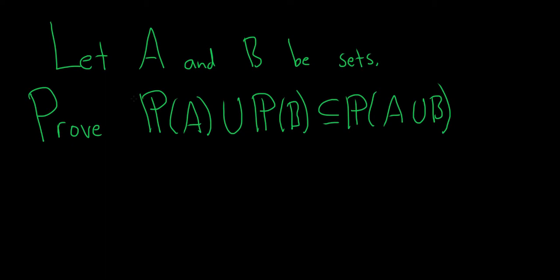Let A and B be sets. Prove that the power set of A union with the power set of B is a subset of the power set of A union B. So the power set of A is the set of all subsets of A. Let's go ahead and go through this proof.